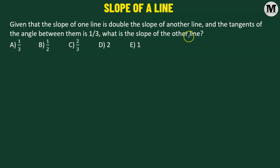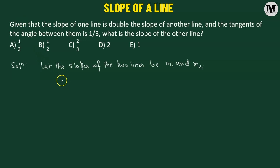Given that the slope of one line is double the slope of another line, and the tangent of the angle between them is 1 over 3, what is the slope of the other line? Let us begin by considering that the two slopes be denoted by m1 and m2. It is given that the slope of one line equals double the slope of another, so let m1 equals 2 times m2.